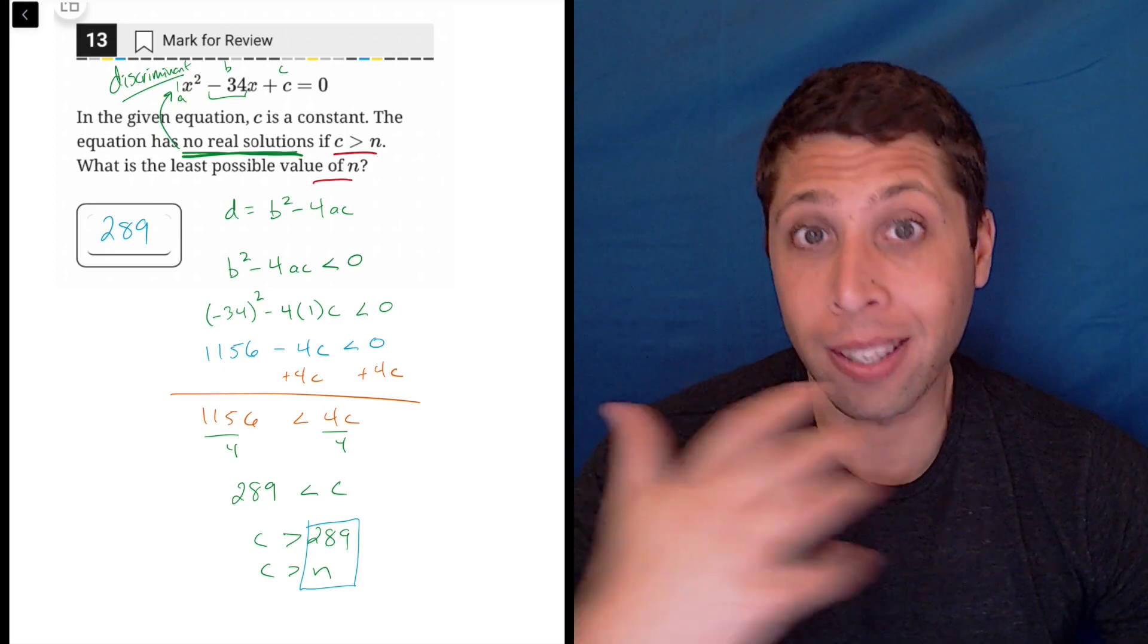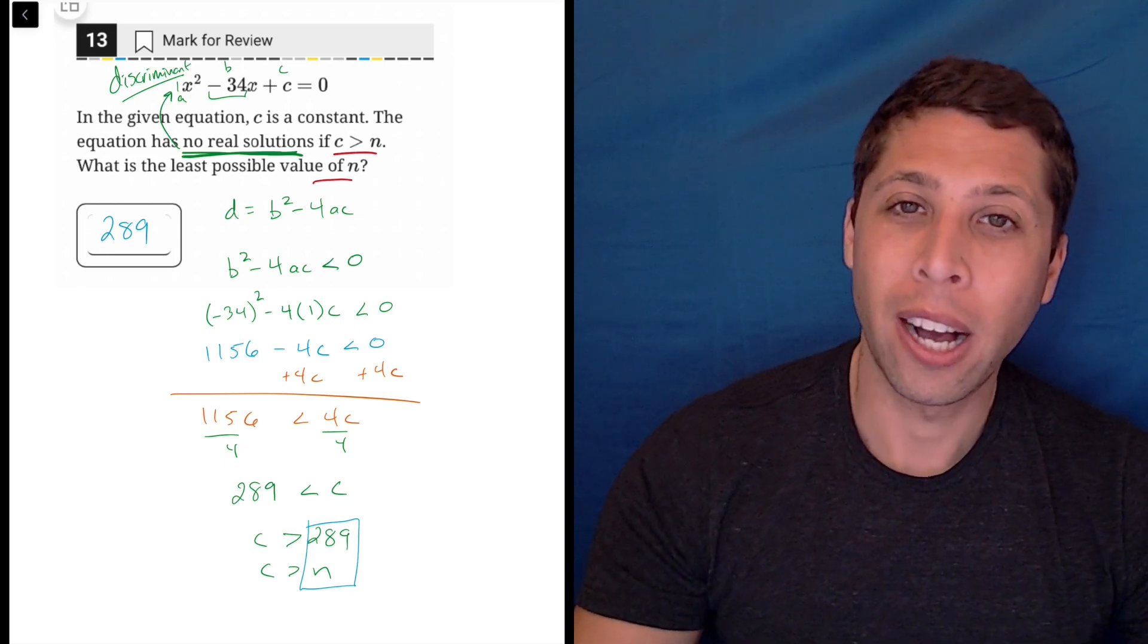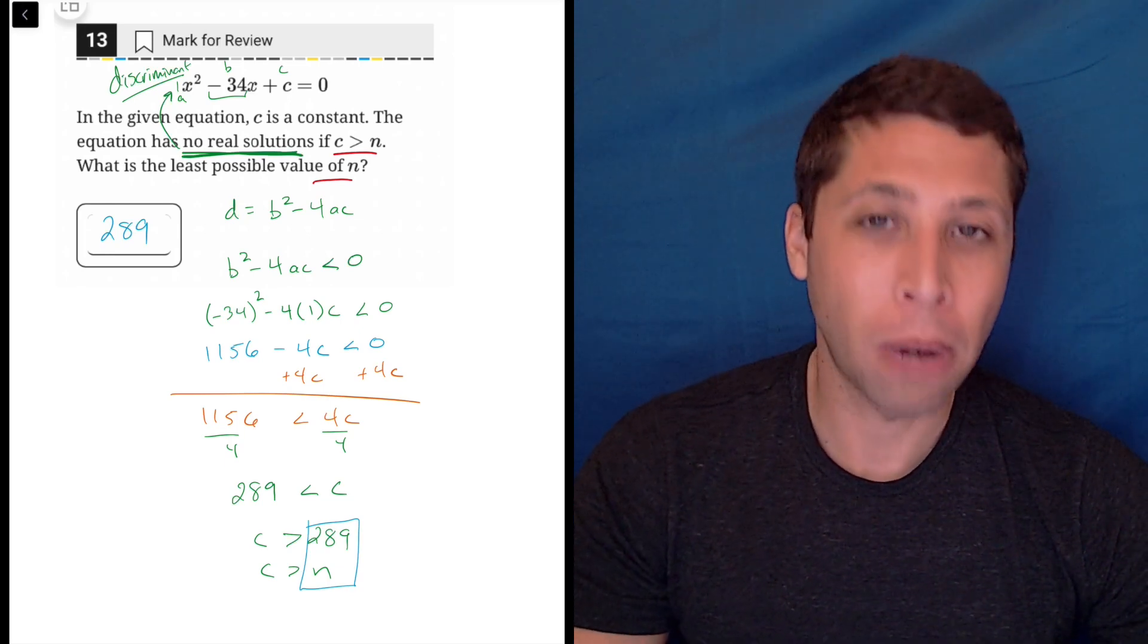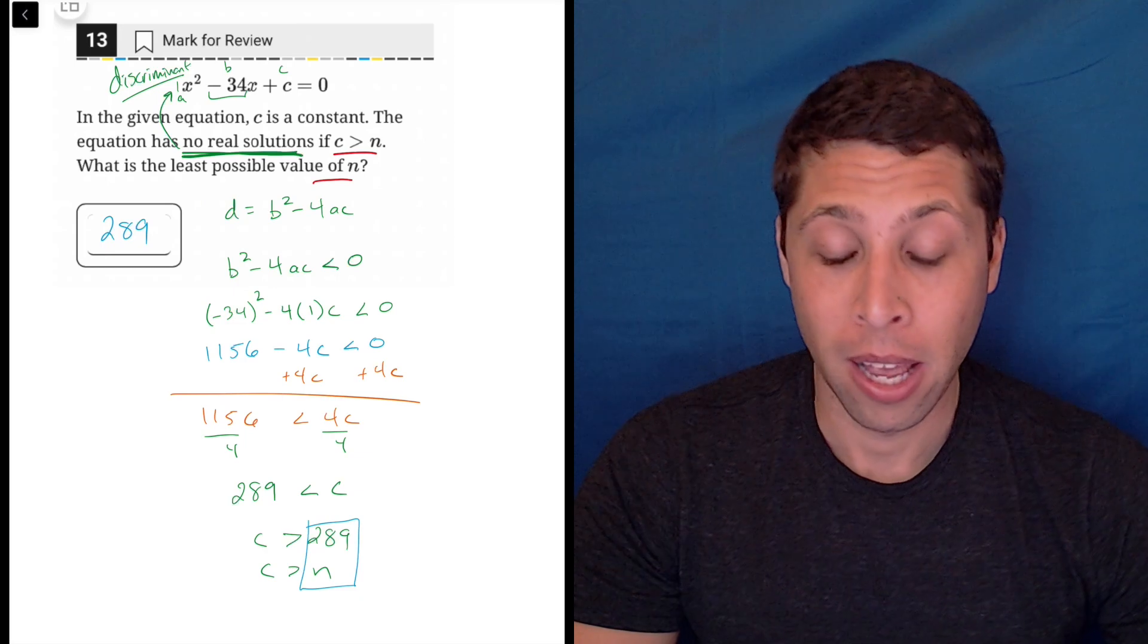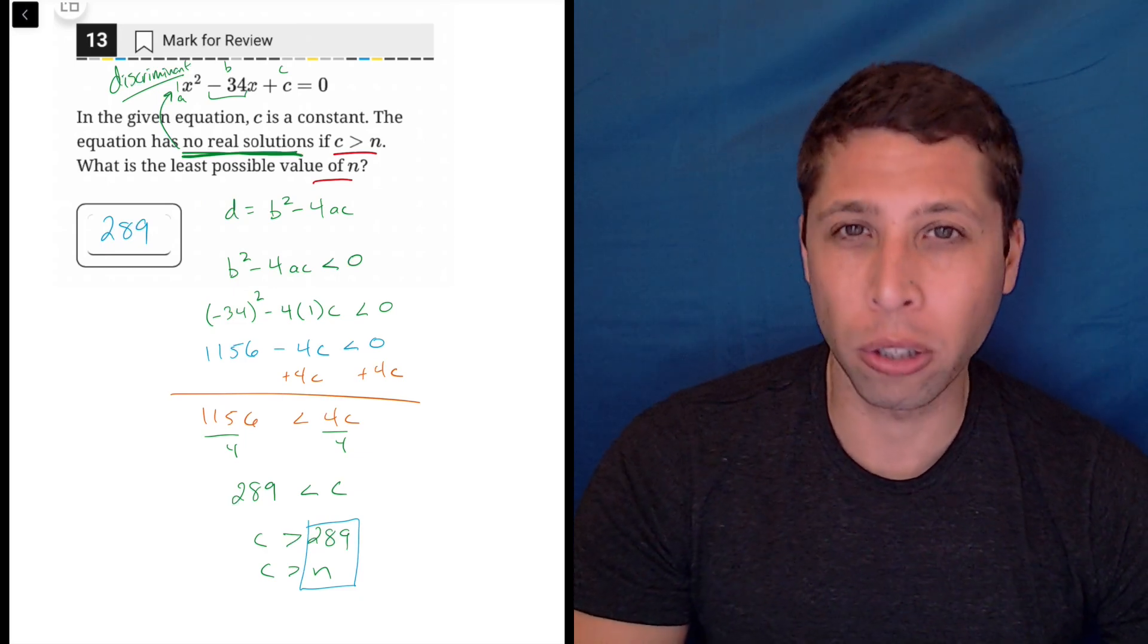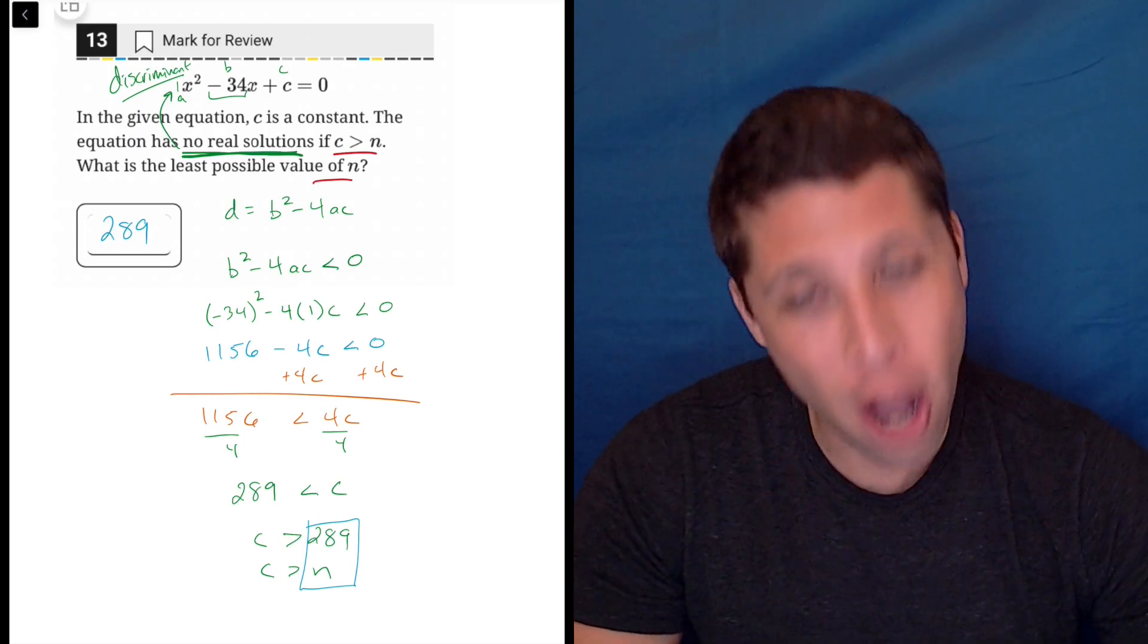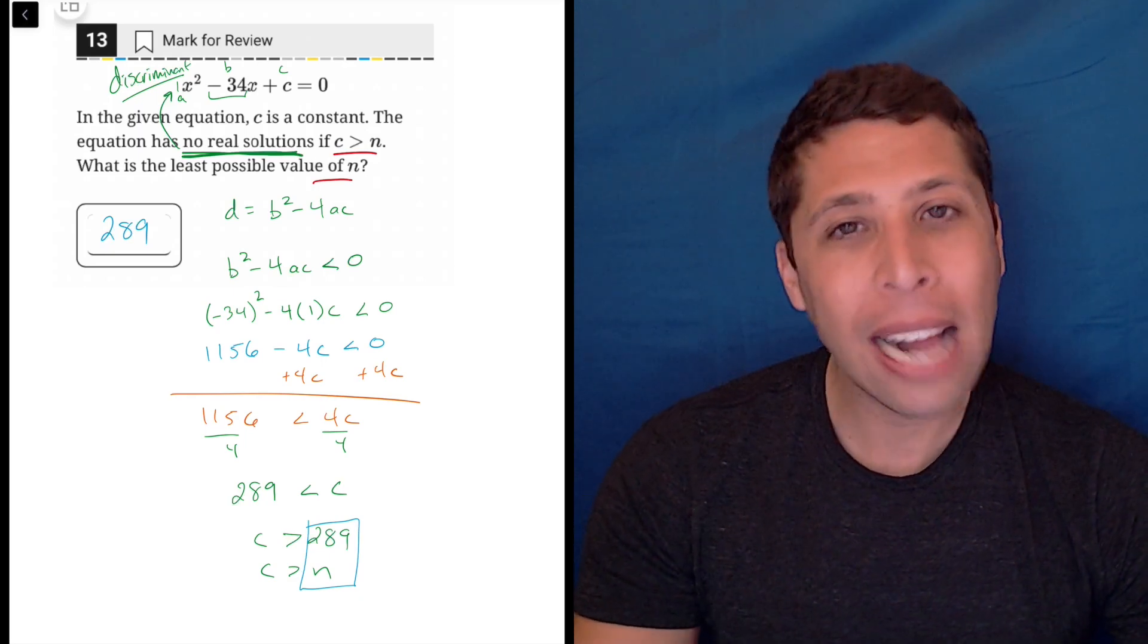So the advice that I follow myself when I'm taking a test is if you know a little bit about what to do, you probably know everything you need to do. In this case, when I saw that the topic was number of solutions for a quadratic, I've been studying for the SAT for a long time. I know that has to do with the discriminant. And I just went down that path.